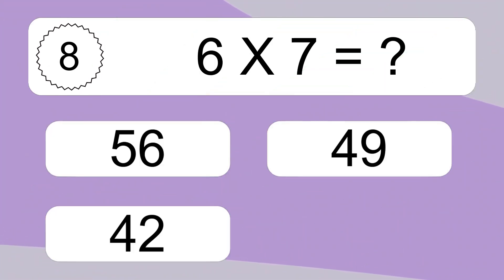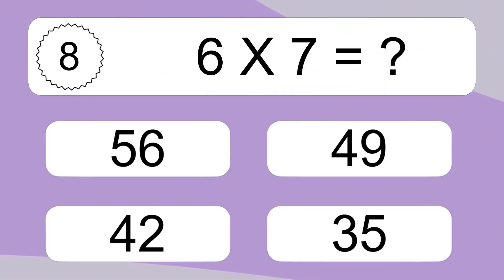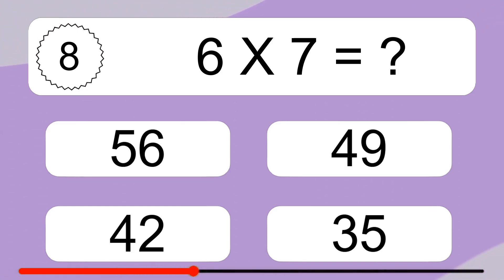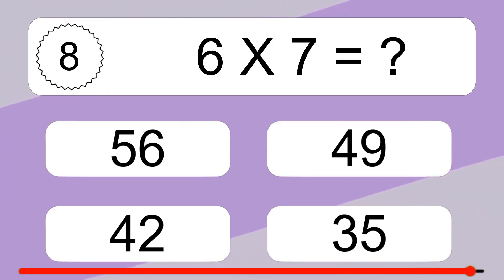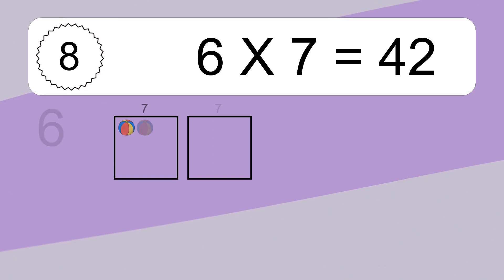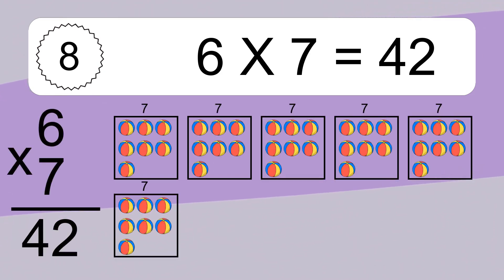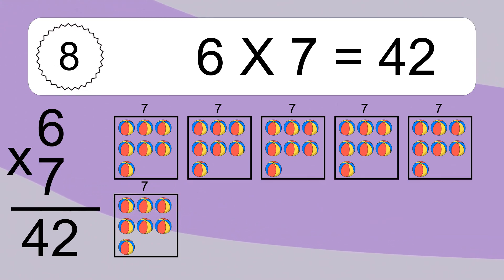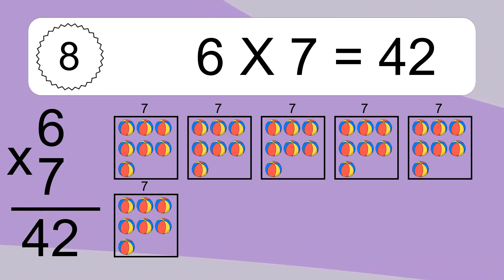6 times 7 equals what? 6 times 7 equals 42. We have 6 boxes, and each box has 7 colorful balls inside. If you count all the balls in all the boxes together, you will have 6 times 7 balls. This equals 42 balls.